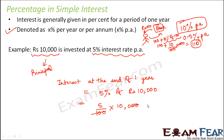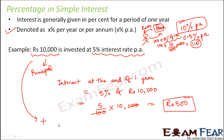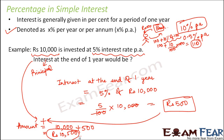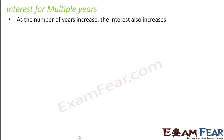5 by 100 into 10,000 equals rupees 500. That means at the end of one year, the amount you have to return to the bank is the principal 10,000 plus the interest of rupees 500, which equals rupees 10,500. This is the money you will have to return to the bank after one year.